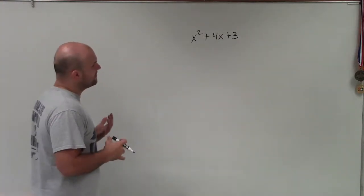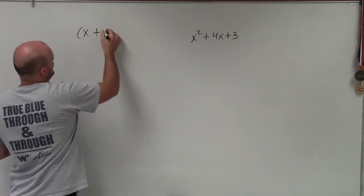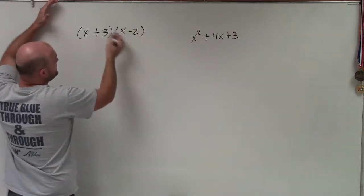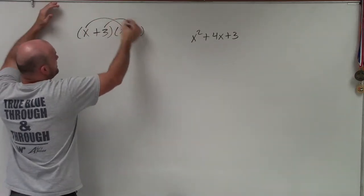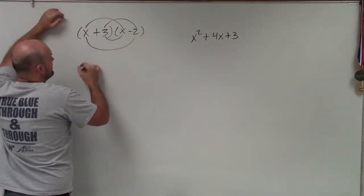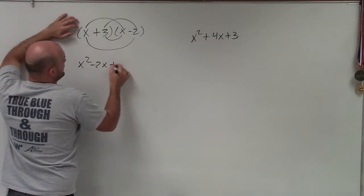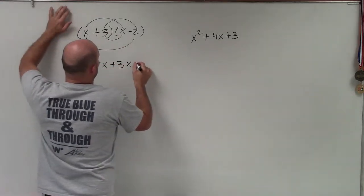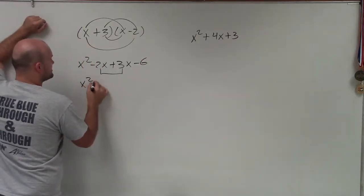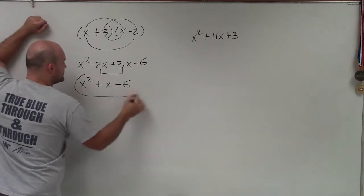To do that, if you remember when we did FOIL — for example, x plus 3 times x minus 2 — we multiplied every term by each other. For that case, I got x squared, negative 2x, positive 3x, minus 6. Then we combine those like terms to get plus x minus 6, creating this trinomial.